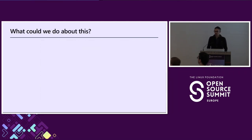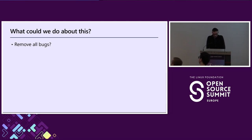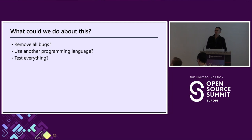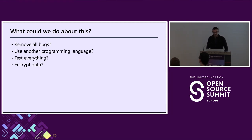What can we do? Remove all bugs? That would be nice, but that's not really possible — we can reduce them as much as possible, but we need to live with them. Use another magic programming language? We can use better, safer languages that give more guarantees, but it's not a silver bullet. Test everything? We can test most use cases and we should, but attackers target corner cases, so testing everything is not possible. Encrypting data is good, but it doesn't solve our problem here.